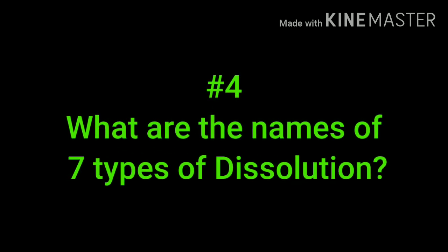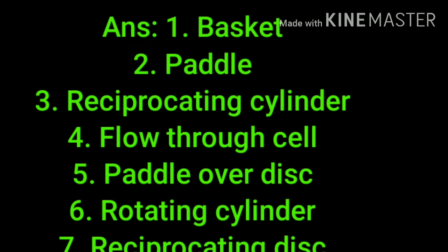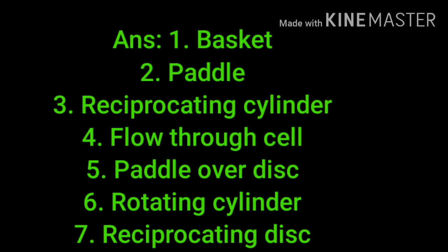What are the names of the seven types of dissolution apparatus as per USP? The first is Basket, second is Paddle, third is Reciprocating Cylinder, fourth is Flow-Through Cell, fifth is Paddle Over Disk, sixth is Rotating Cylinder, and seventh is Reciprocating Disc.